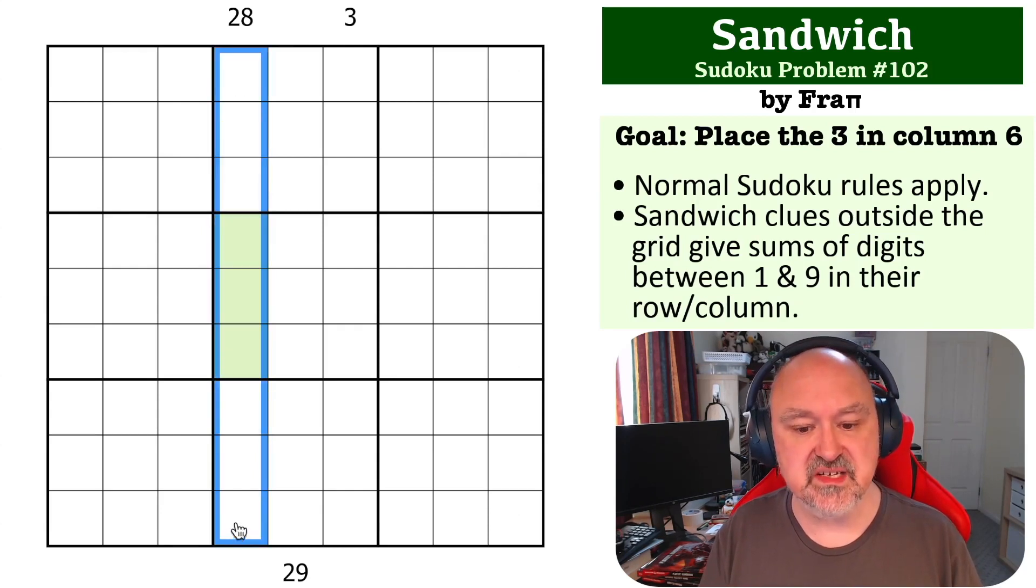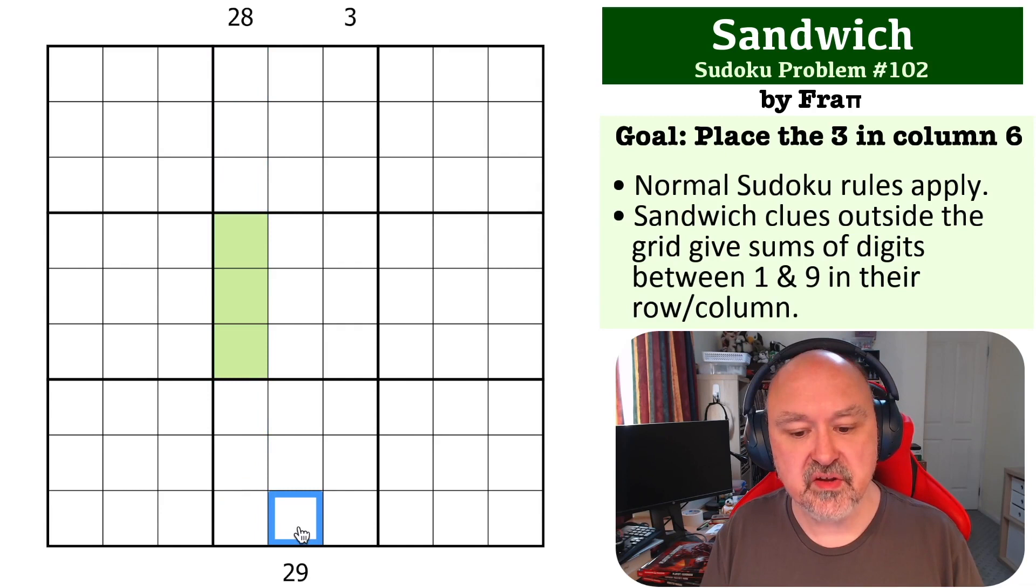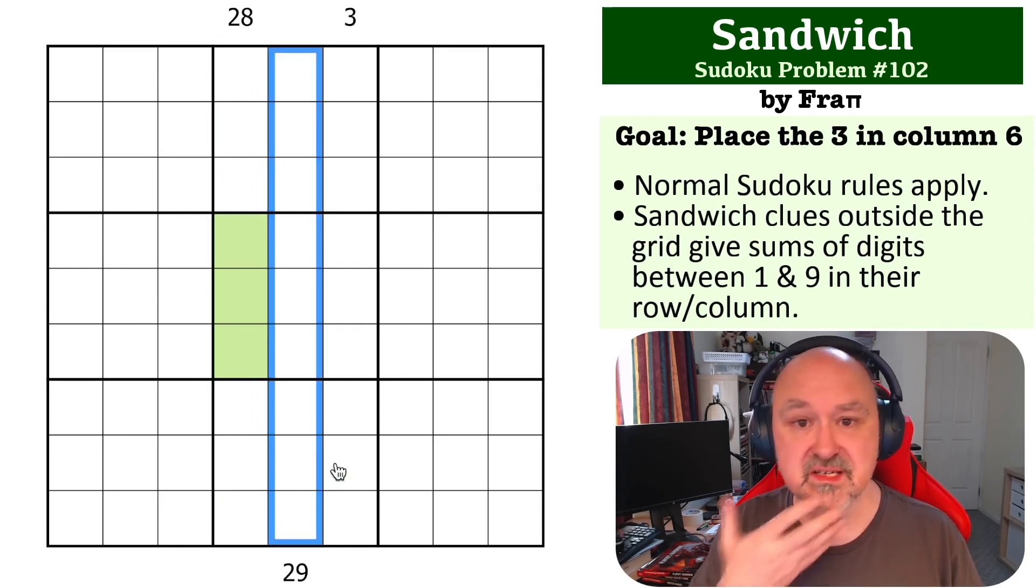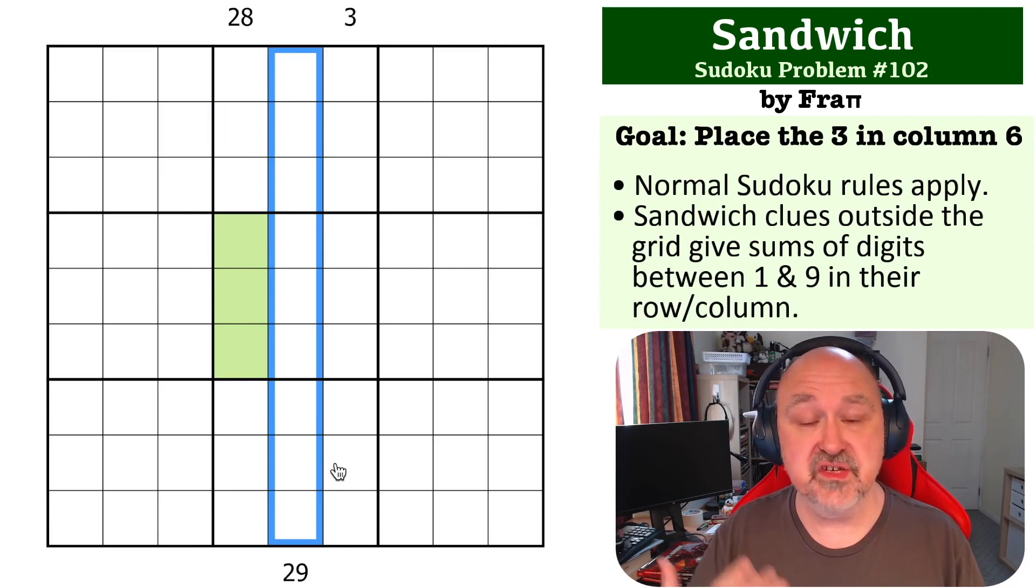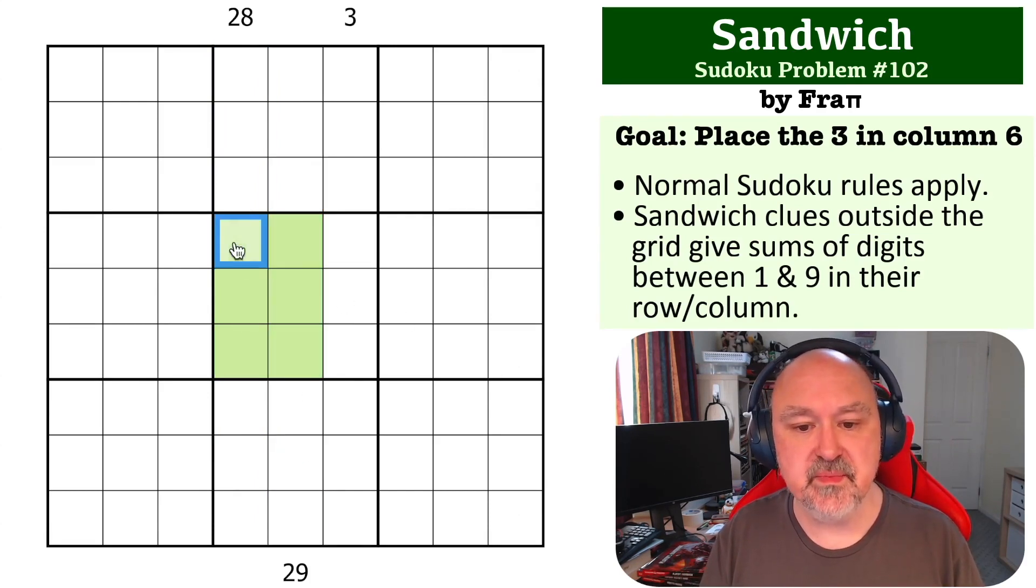So those cells there must be in the meat of the 28 clue. And if you look at the 29 clue, that one's even worse. The total is larger, so you also must use at least five clues. So again, these three clues must be in the meat. Now we don't know where the crusts are—they could be here and here, they could be here and here—we don't know. But these must be in the meat of the sandwich. You cannot put one or nine in any of these.